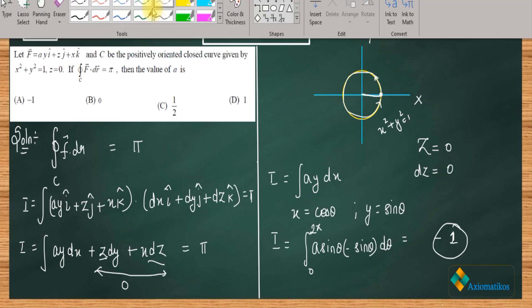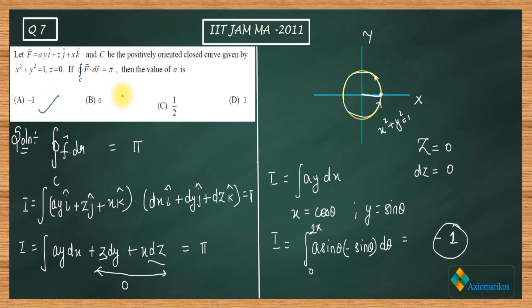So that means a is correct, b is incorrect, c is incorrect, d is incorrect. Thank you.